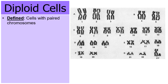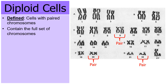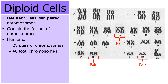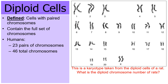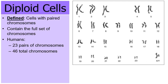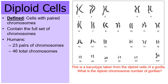Diploid cells are cells with paired chromosomes — a pair of chromosome 20s, a pair of chromosome 9s, a pair of chromosome 22s. All chromosomes are paired. Diploid cells contain the full set of chromosomes common to a species. In humans there are 23 pairs, so the human diploid number is 46 total chromosomes. The rat karyotype has 21 pairs, giving a diploid number of 42. Gorillas have 24 pairs, so their diploid number is 48.